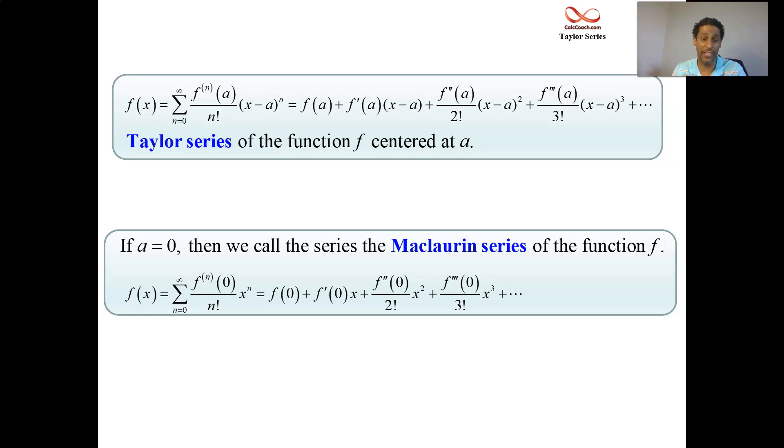We're going to find the Maclaurin series for e to the x by calculating these coefficients: the function at 0, the derivative at 0, second derivative at 0, dividing by 2 factorial, and on forever. Then we'll get the general formula and be able to know for what x's it converges. We've got to find the interval of convergence as well. So let's get started.